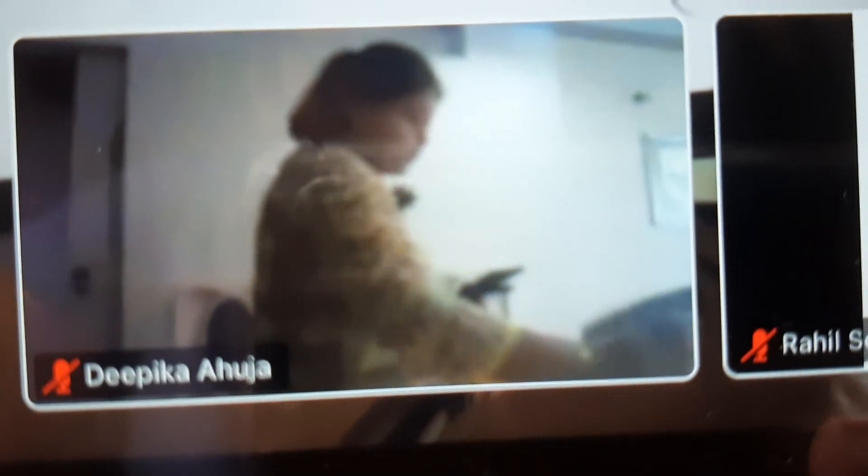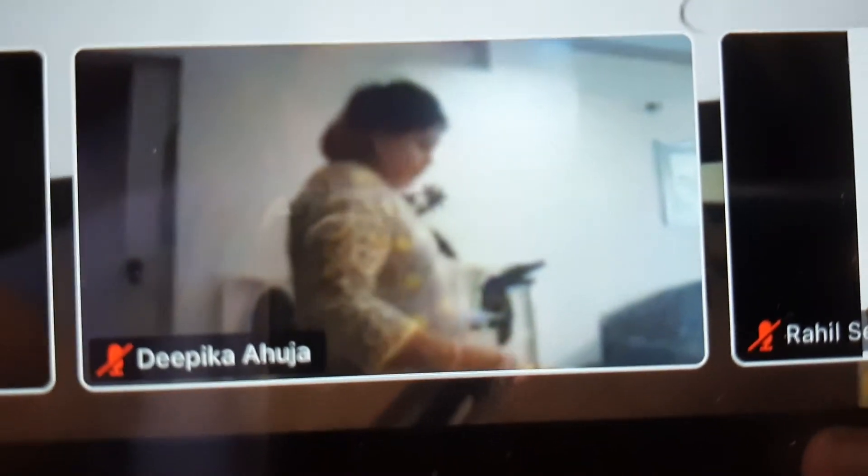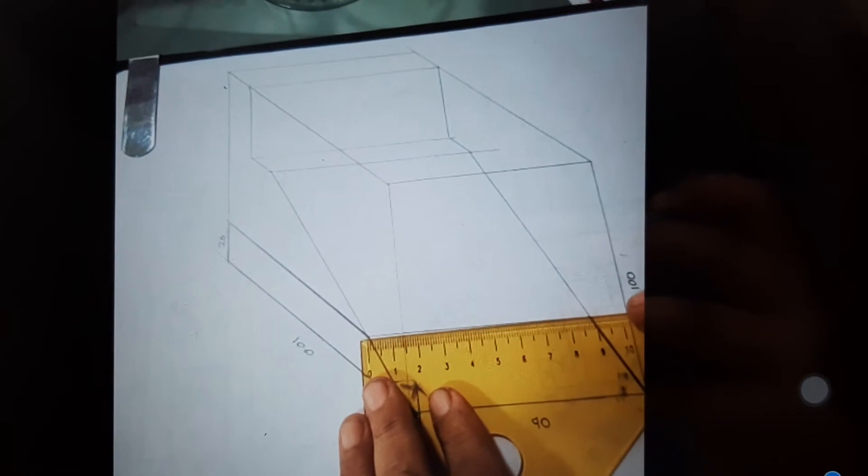Ma'am, that rectangle in the front view is a cut, right? In the middle? Yeah, that I have not done. I have just projected. Now I will see here. So why is there a black line below that?